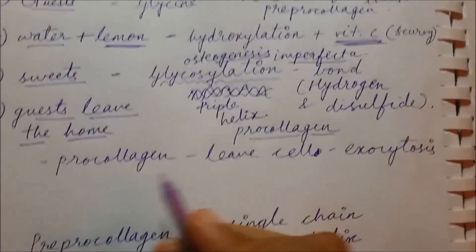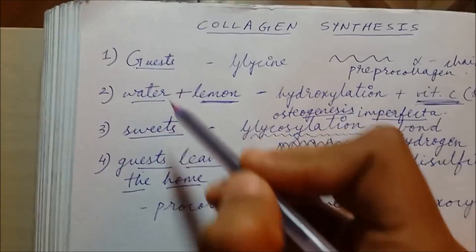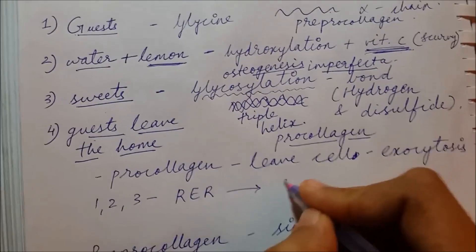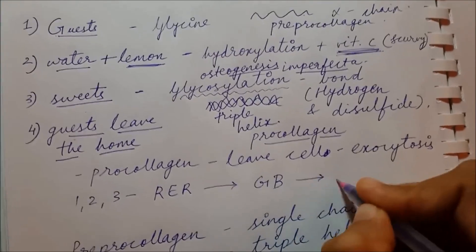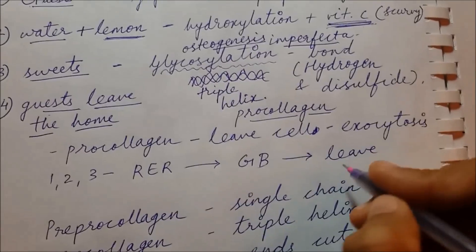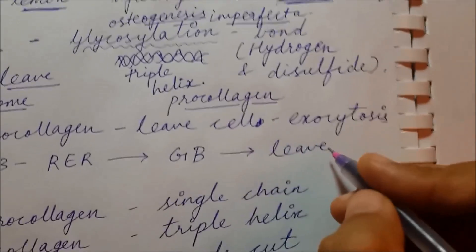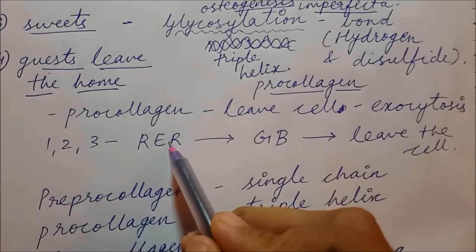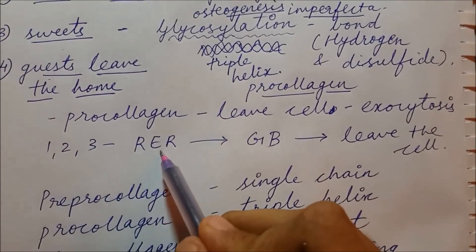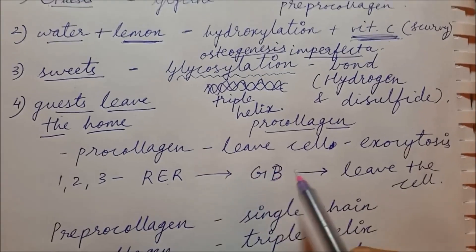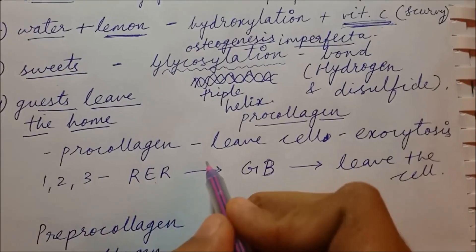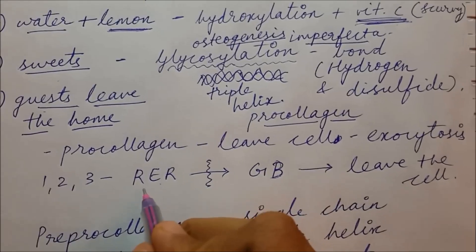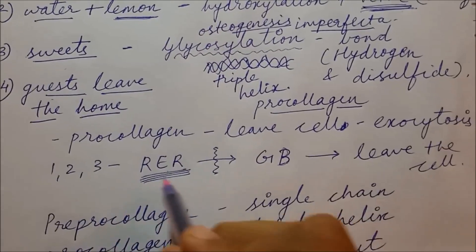The first three steps occur in the rough endoplasmic reticulum (RER). From the RER, procollagen goes to the Golgi body, and from there it leaves the cell. If there is a problem transporting procollagen from the RER to the Golgi body, there will be accumulation of procollagen in the rough endoplasmic reticulum — this is also a tested concept.